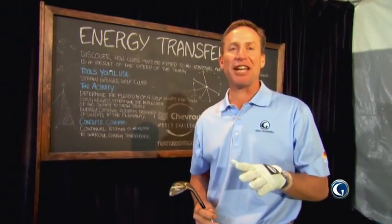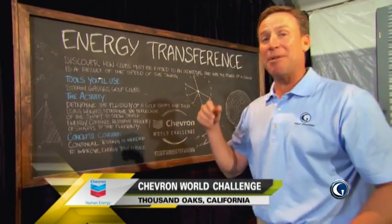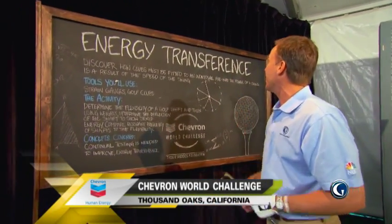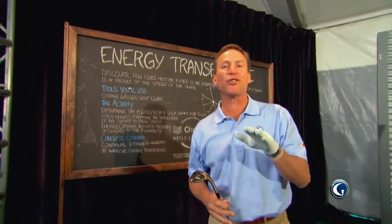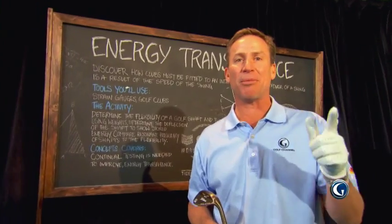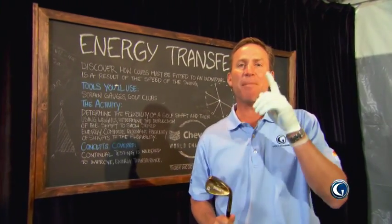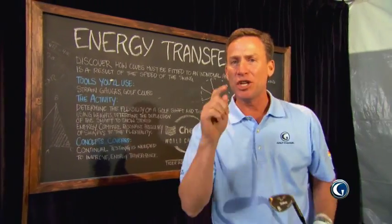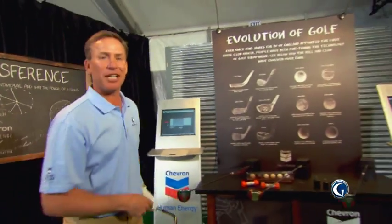Welcome back to this special edition of The Golf Fix on location from the Chevron World Challenge. I'm inside the stem zone doing a little light reading on energy transference, certainly something critical to controlling distance. I caught up with Paul Casey down on the practice tee — controlling distance with the wedges, the math behind his technique and what he does. Pay attention to that, because I'm going to learn a little bit about the evolution of golf.